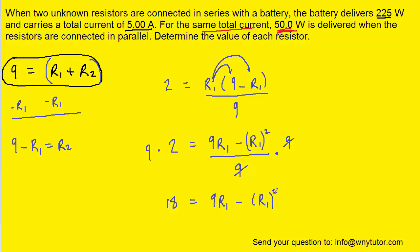Since we have the variable squared, we're going to have to use the quadratic formula. To do that, we need to get all the terms moved to one side so that the other side is equal to zero. So we'll add the R1 squared over to the left side and then subtract the 9R1 also over to the left side.